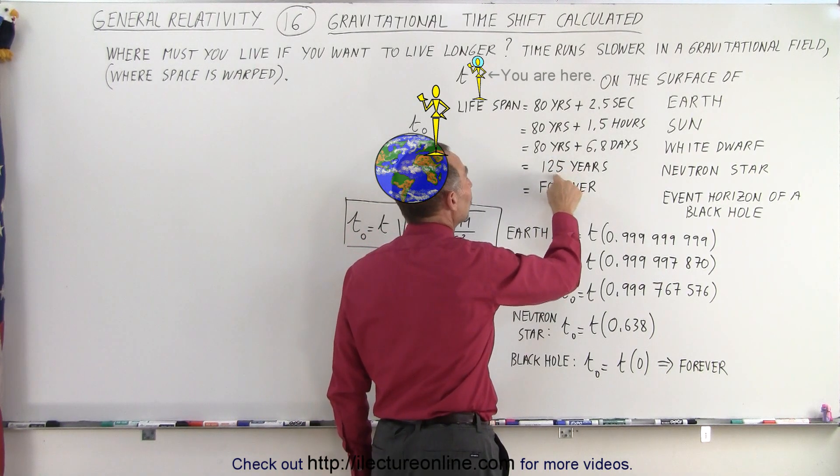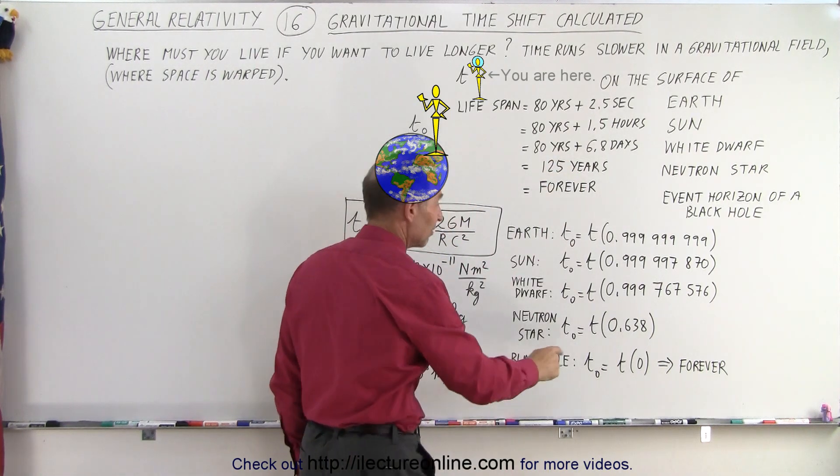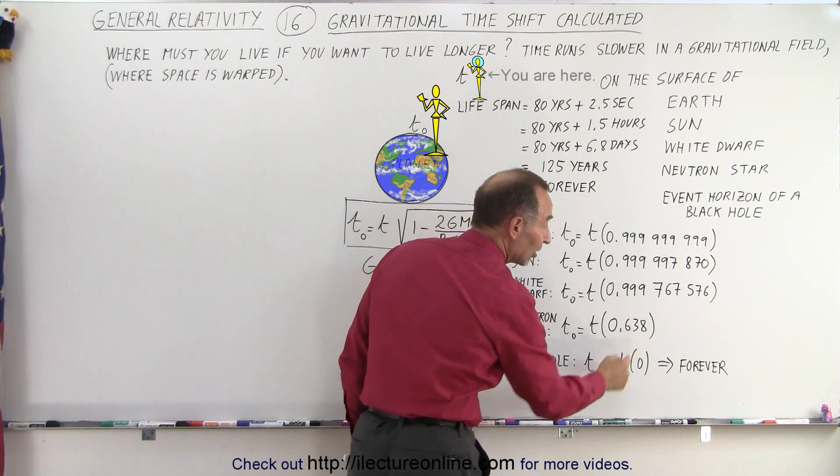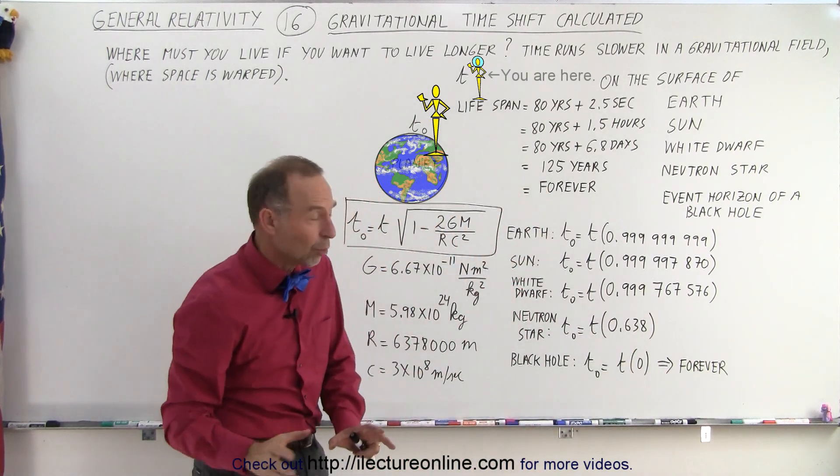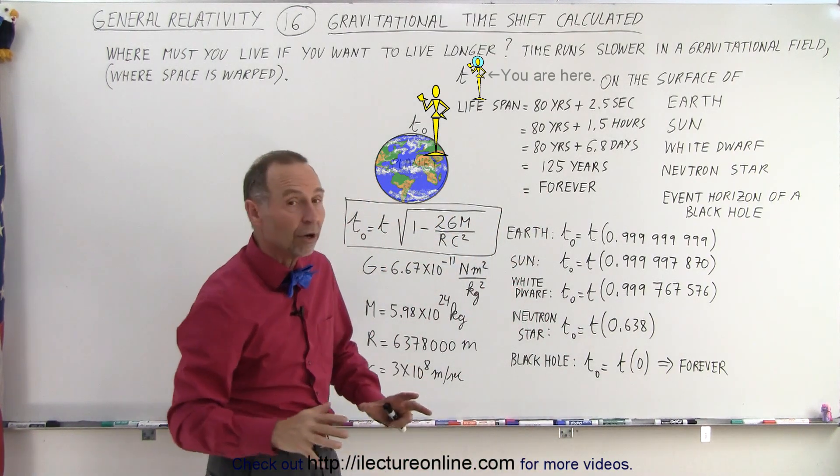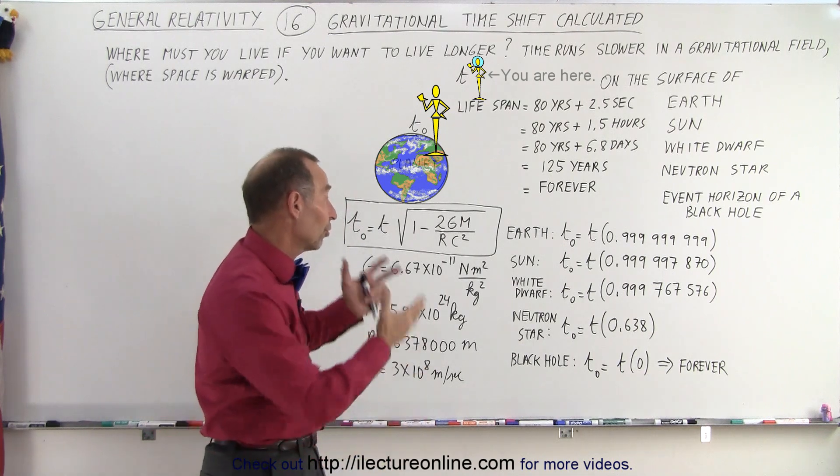instead of 80 years, you would live 125 years, because the time differential is quite significant. Time runs a whole lot slower on the surface of a neutron star relative to being out in space or on the surface of the Earth.